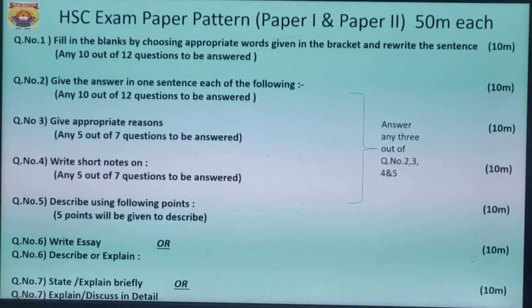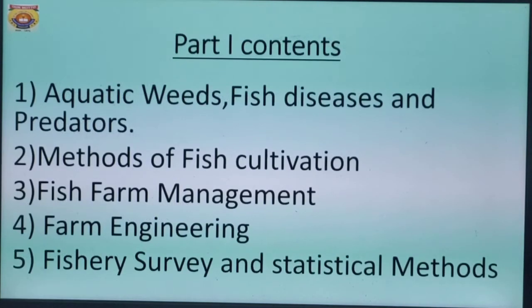Children, now I'll share with you the contents of part 1 that you have to study when you give the part 1 examination. First is aquatic weeds, fish diseases, and predators. Second, methods of fish cultivation. Third, fish farm management. Fourth, farm engineering. And fifth, fishery survey and statistical methods. Children, these are the five chapters which you have to go through thoroughly while appearing for your HSC examination.